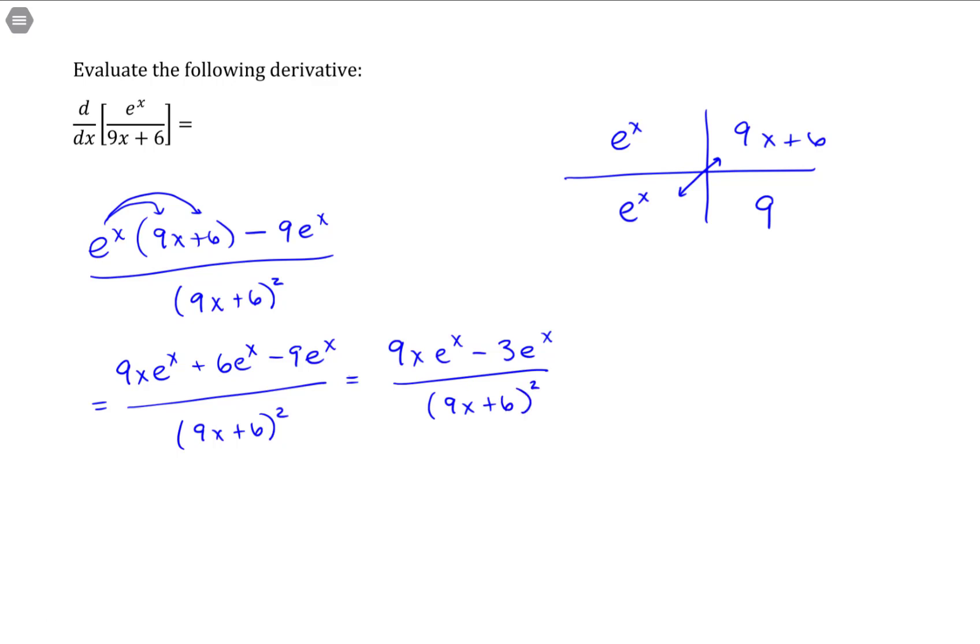Now at this point, you have a common factor of e^x and a common factor of 3 that could both be pulled out.